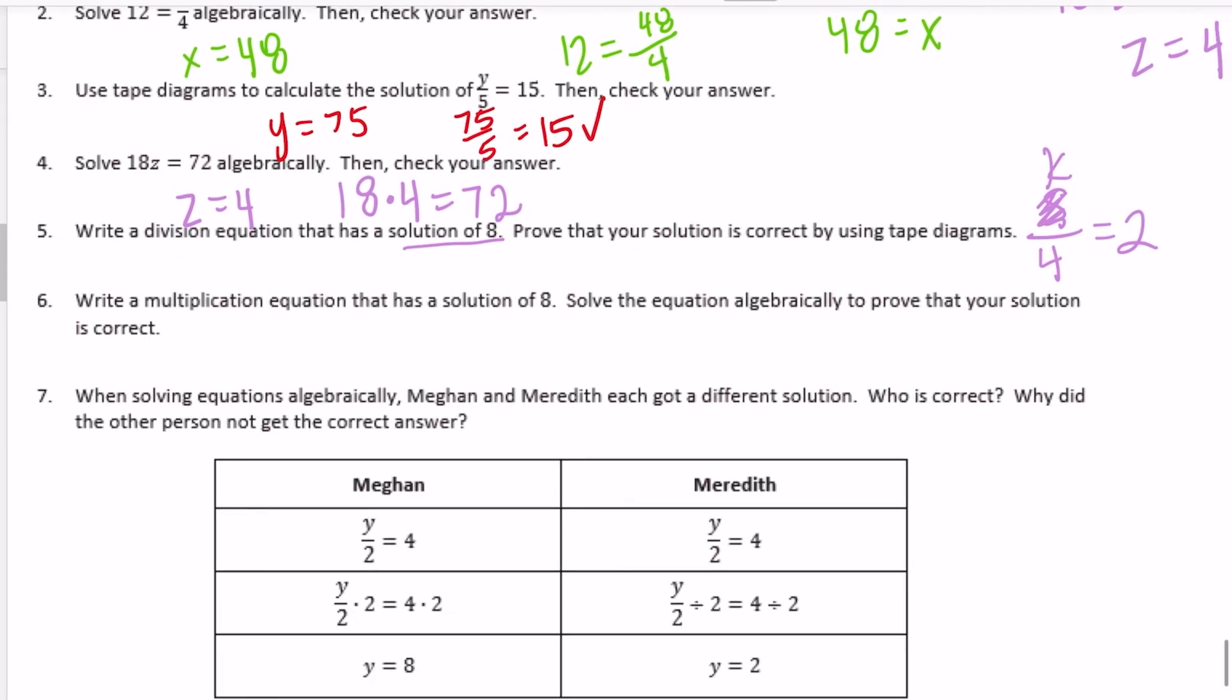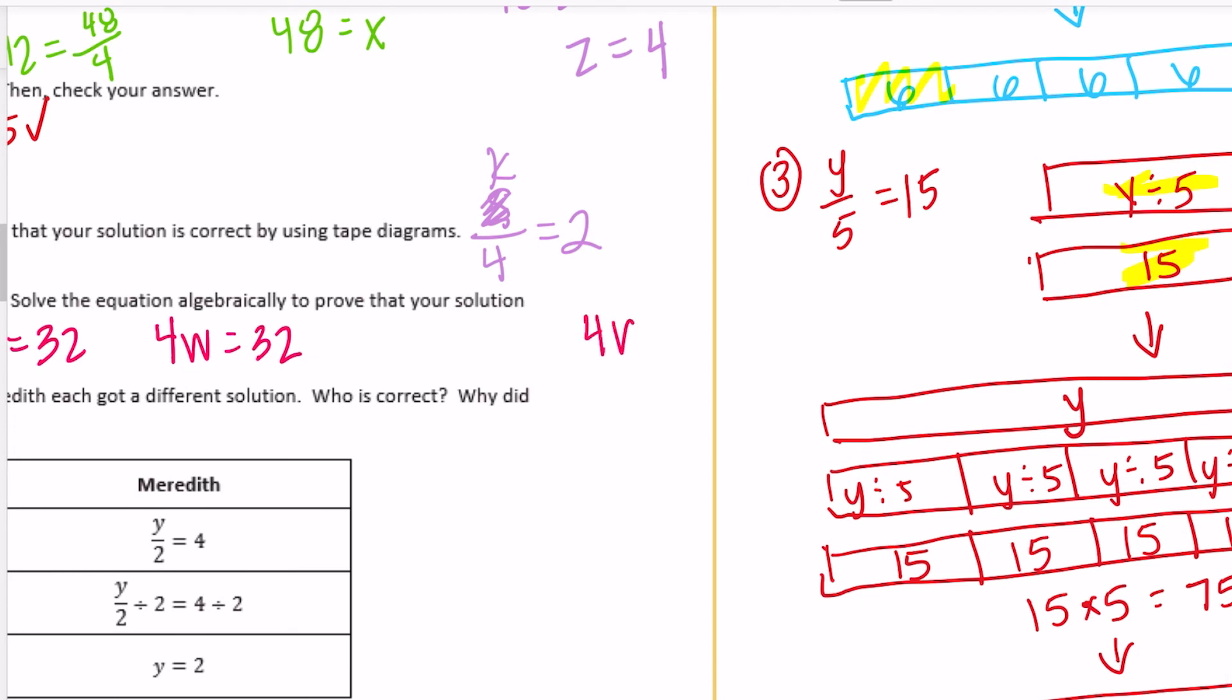And number 6, write a multiplication equation that has a solution of 8. So now we're going to do the same thing but a multiplication equation that has a solution of 8. So let's do something like 4 times 8 equals 32. But instead I'm going to make it 4w equals 32. So 4w equals 32. Since I've multiplied 4 times w, to get rid of that I need to divide by 4. So I have 4w divided by 4. But what I do to one side I have to do to the other. So I also need to divide by 4 over there. So these cancel each other out. And we just have w is equal to 32 divided by 4 is 8. So w is equal to 8.